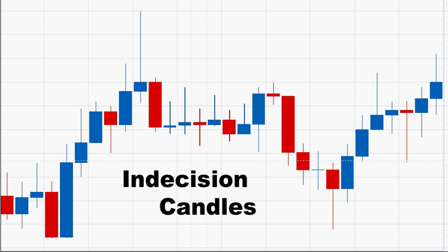Before explaining the morning star pattern you must first learn what an indecision candle is, as it helps form the morning star pattern. An indecision candle is a candle that is neither bullish nor bearish. It shows that the market has not decided which way to go, up or down. Indecision candles have small bodies or no bodies, which means the opening price and closing price are the same or very near the same. Indecision candles are often doji candles.